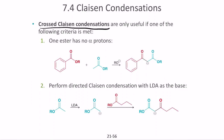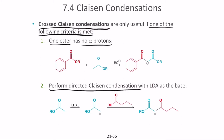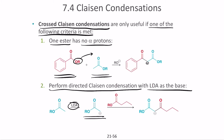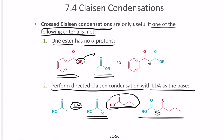Next is cross Claisen condensation. These are only useful if one ester has no alpha protons, or when performing directed Claisen condensation with LDA — lithium diisopropyl amide — as the base. For example, one ester has no alpha protons while another does. The reaction still proceeds by removing the OR group but creates a negative charge on the alpha carbon. When LDA is used as the base, it creates enolate ions that further undergo cross Claisen condensation to give a negatively charged alpha carbon.